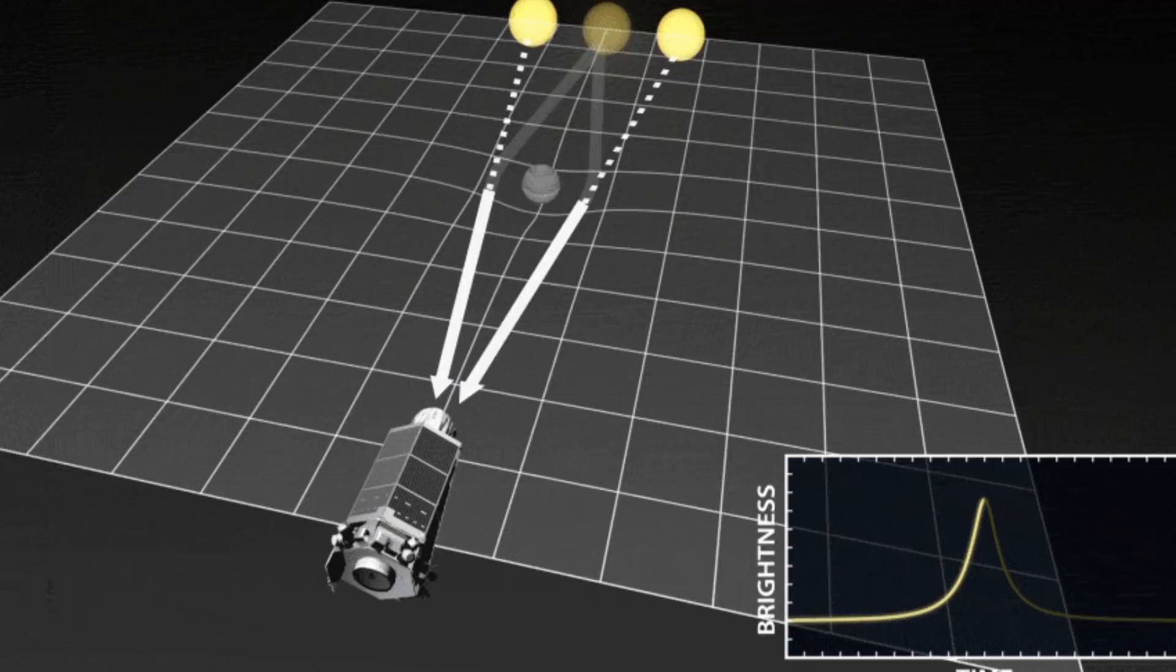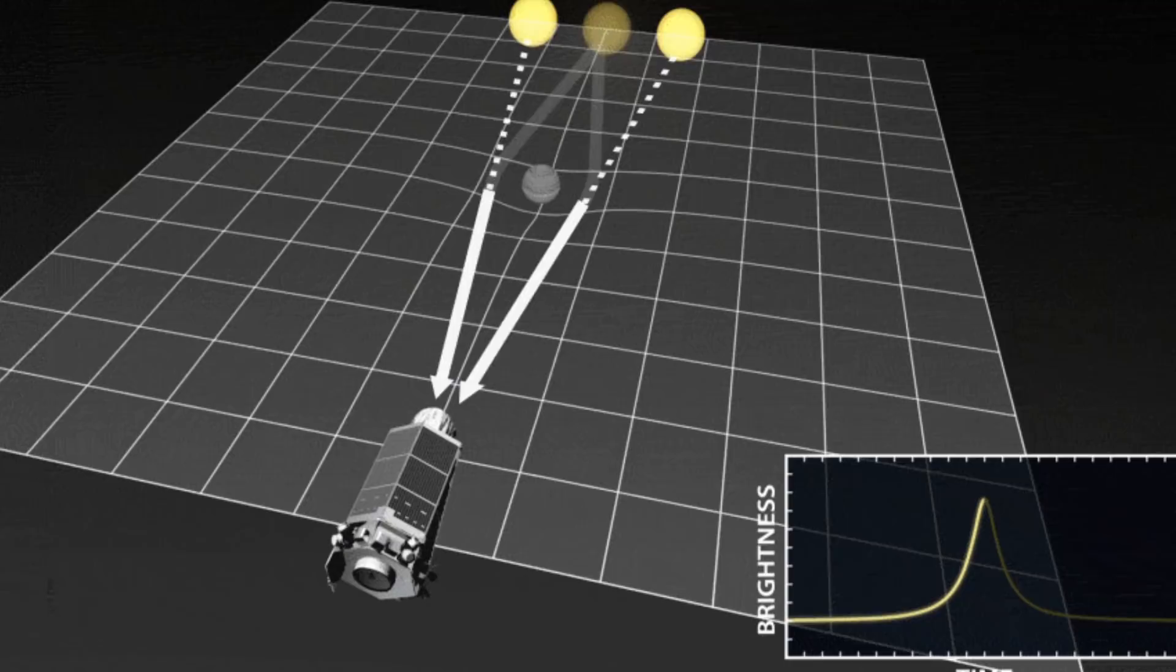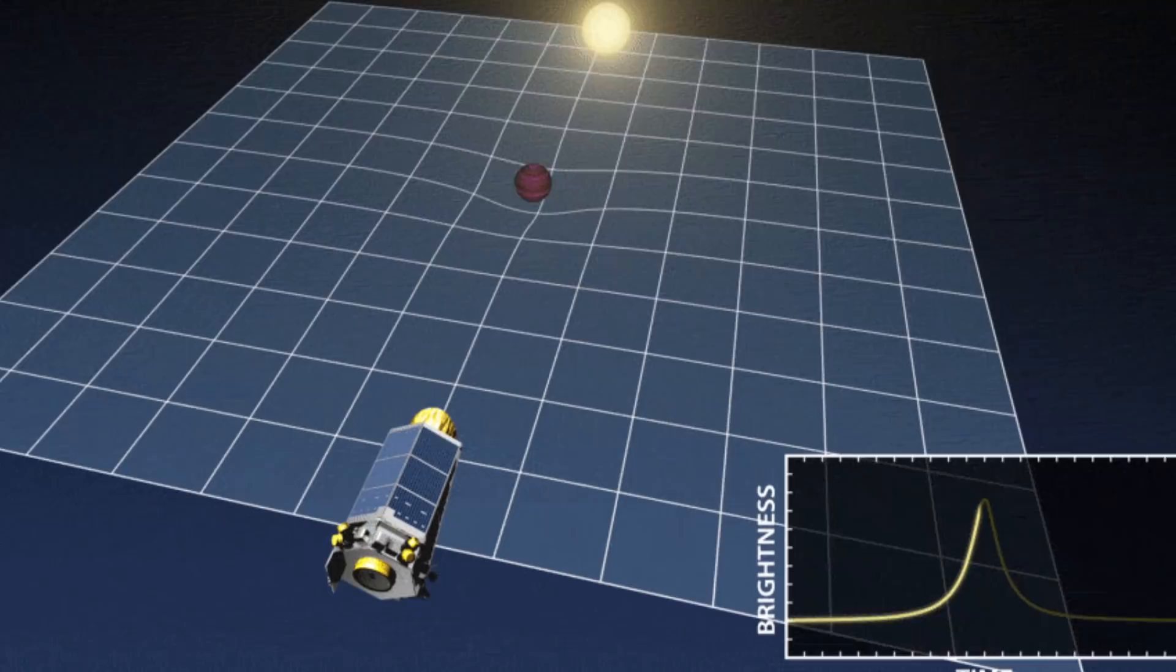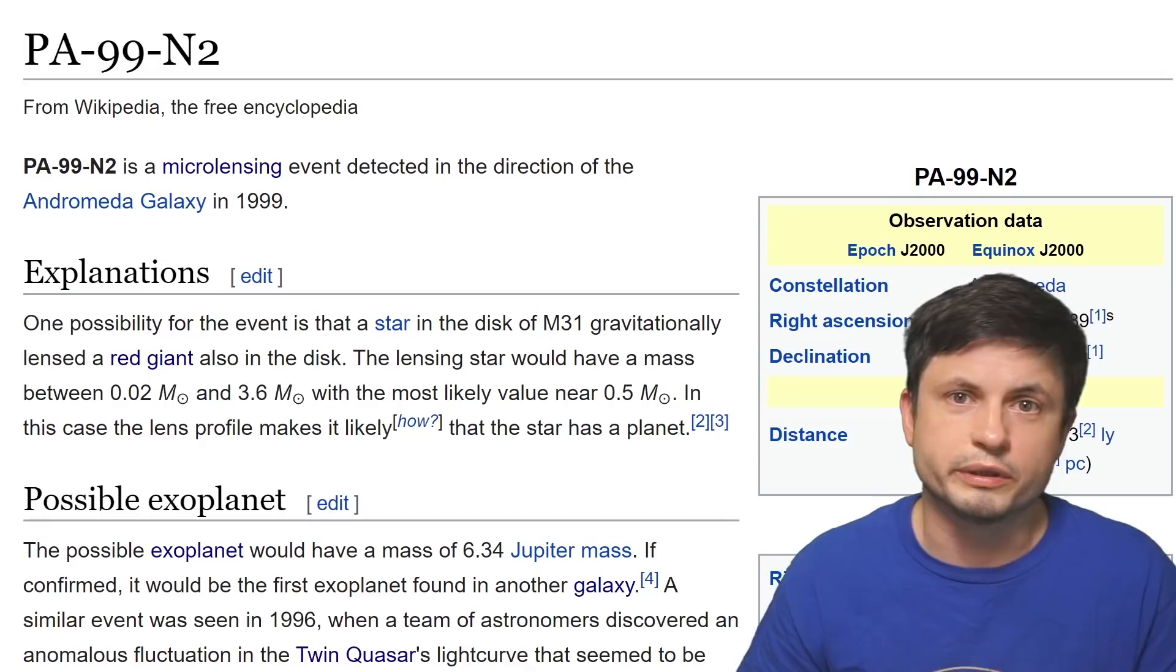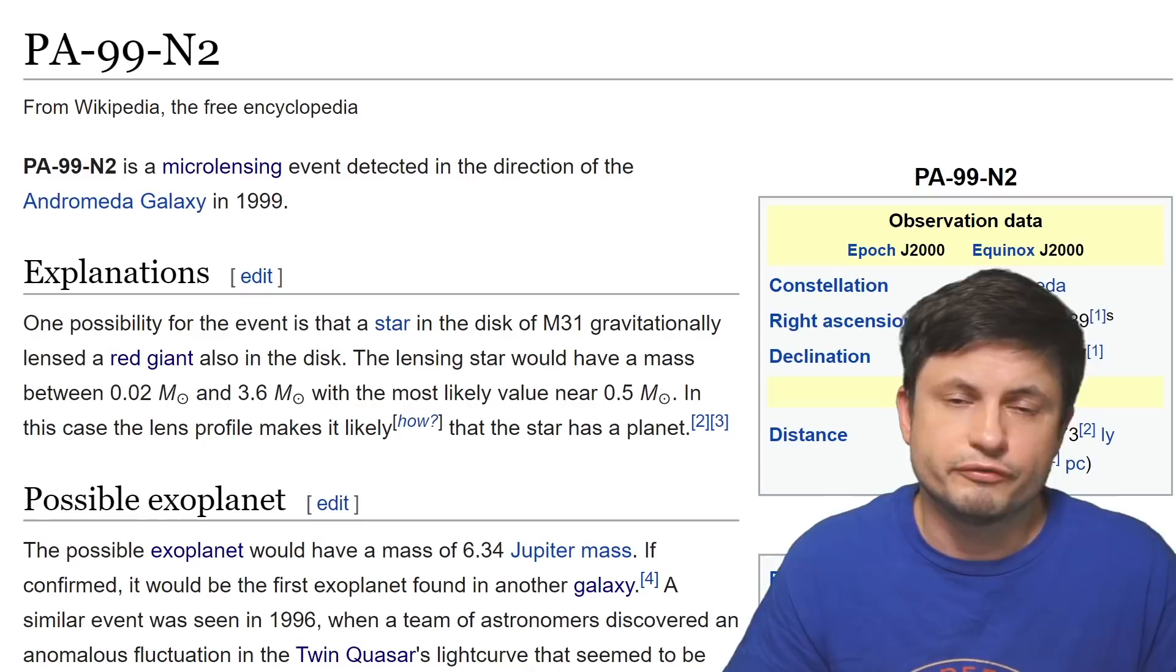Then we have this famous detection from 1999, a little bit closer to home, from the Andromeda Galaxy. And once again, this was detection of some sort of a planet, but this time by lensing a star. And the planet was probably about six masses of Jupiter, with the event known as this. Now, you can read more about this in the link in the description below, but there is unfortunately not much we know. Once again, it's a one-in-a-lifetime event, it potentially contained an exoplanet, but chances are we'll never see this event again.